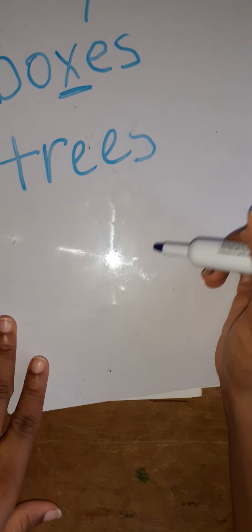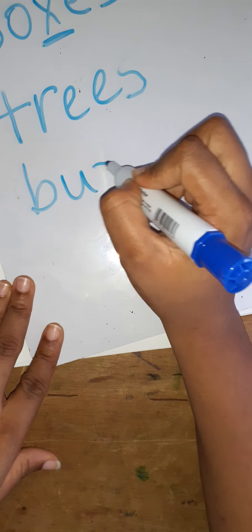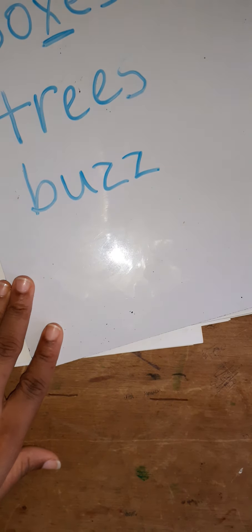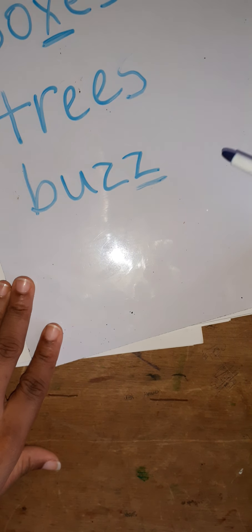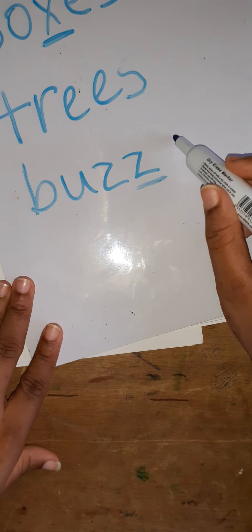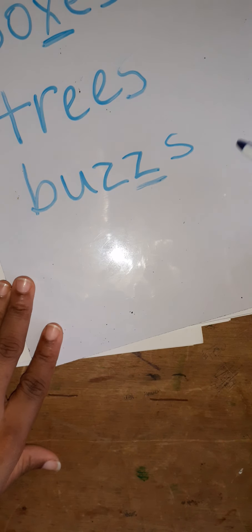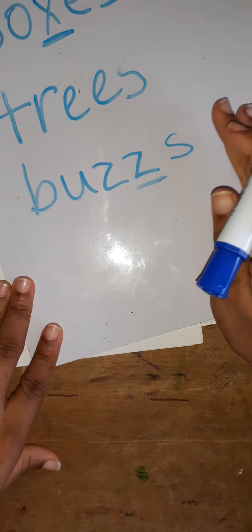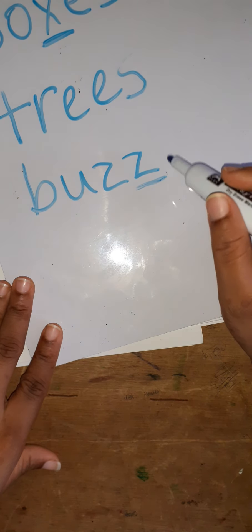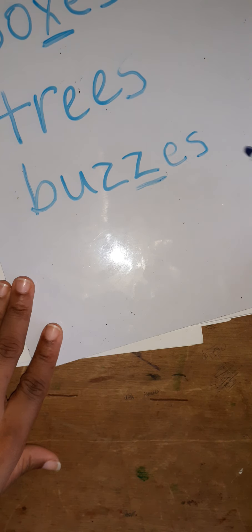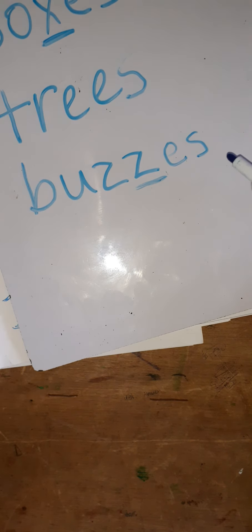The word buzz ends in Z. So what should you do — add S or ES? Because it ends in Z, you add ES, and now it becomes buzzes.